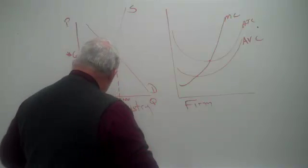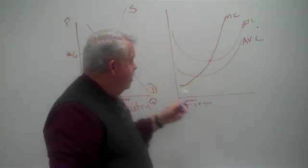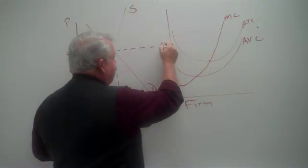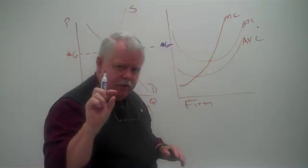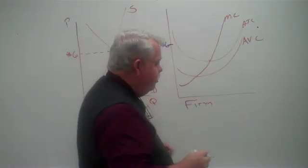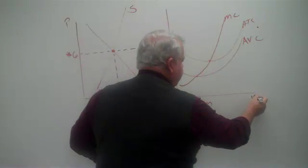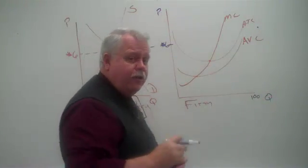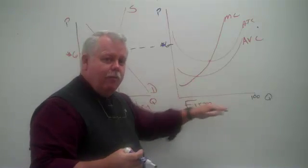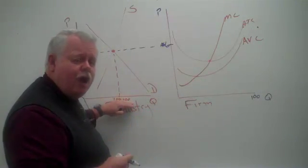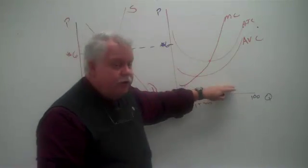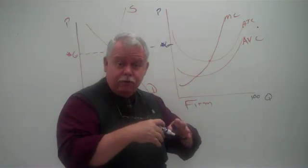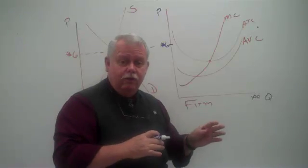But here's the significant part. For this company, the market price of that product is $6. And this company, remember they're all very small, the most this company can produce is 100 units per day. That's their maximum output quantity. Remember that was one of our assumptions: a large number of very small sellers and buyers.